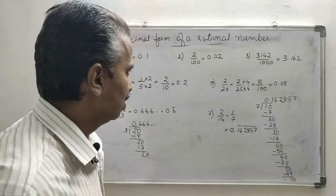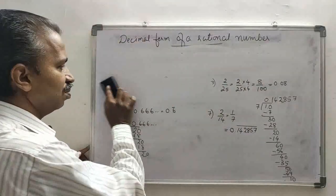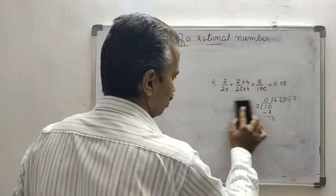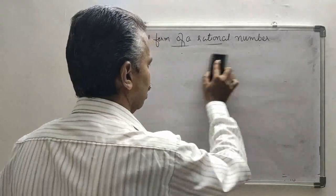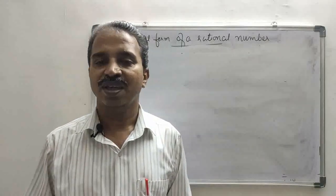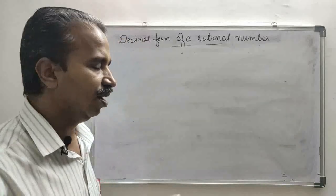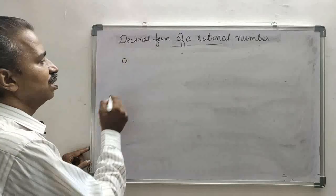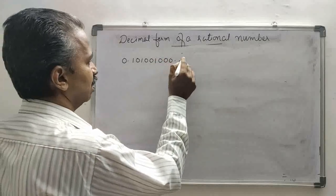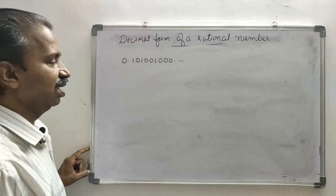There are three types of decimal numbers: terminating decimals, non-terminating recurring decimals, and non-terminating non-recurring decimals. Terminating decimals and non-terminating recurring decimals are rational numbers, but non-terminating non-recurring decimals are irrational numbers. For example, 0.10100100100... is non-terminating and non-recurring, so it is an irrational number.